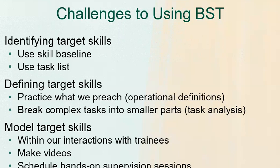We've talked about how you can use the task list and how you should be assessing the skill set of your trainee when they start supervision and throughout. Picture what it is that you think they should be able to do, look at what the BACB says they should be able to do, and see where they are currently. Then start picking skills — maybe you and the trainee together identify where you want to start, based on their interests or what they'd like to implement right away.